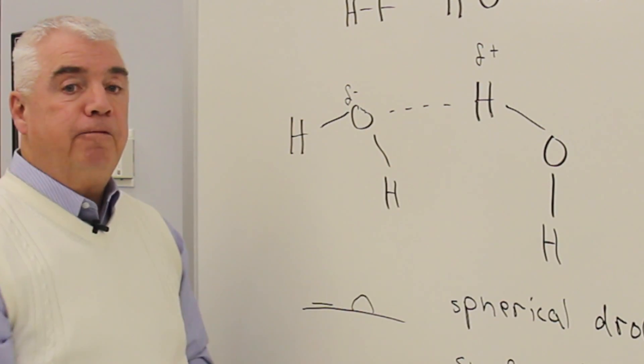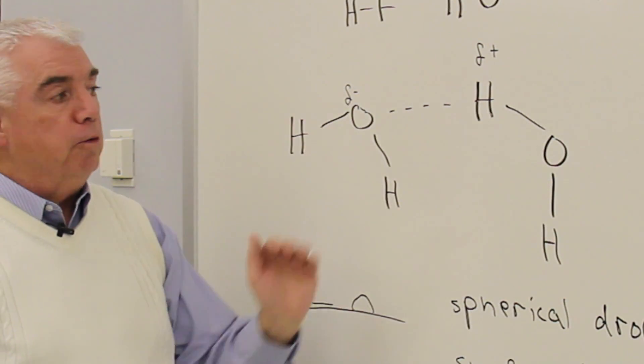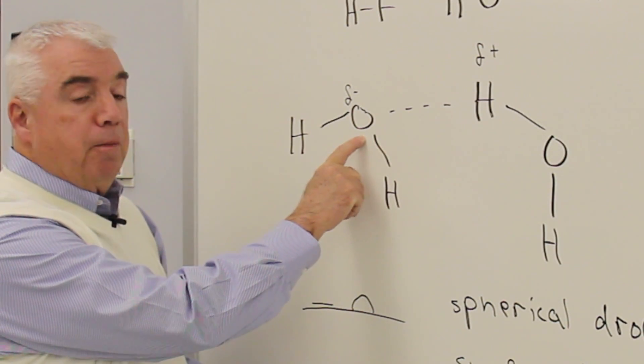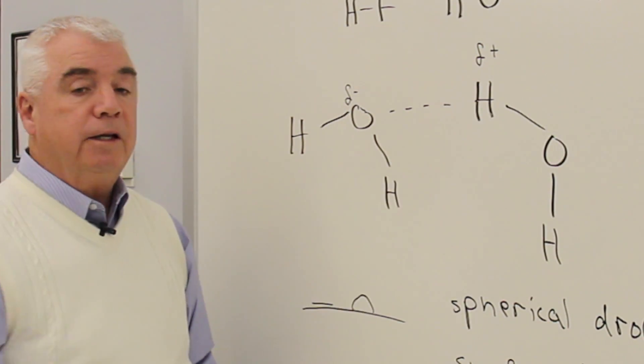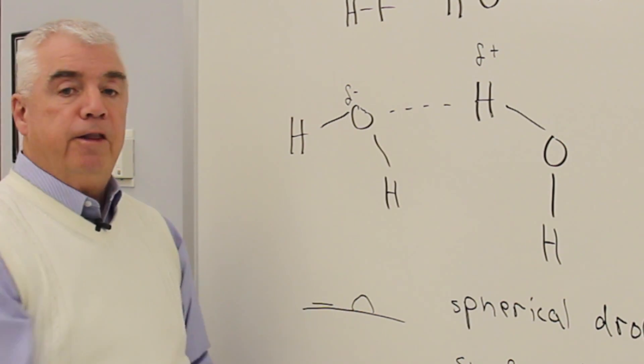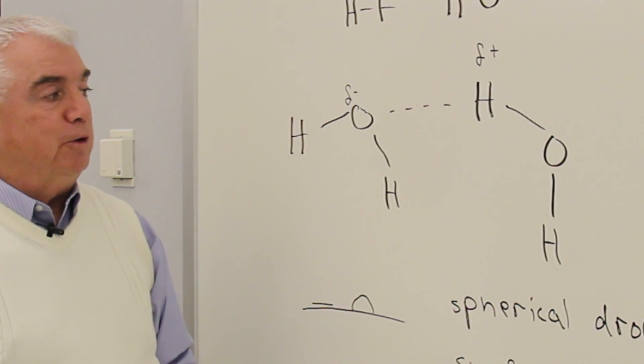So there should be an attractive force between this water molecule and its neighbor from the delta minus oxygen attracting a delta plus hydrogen. This dotted line then represents the hydrogen bond.